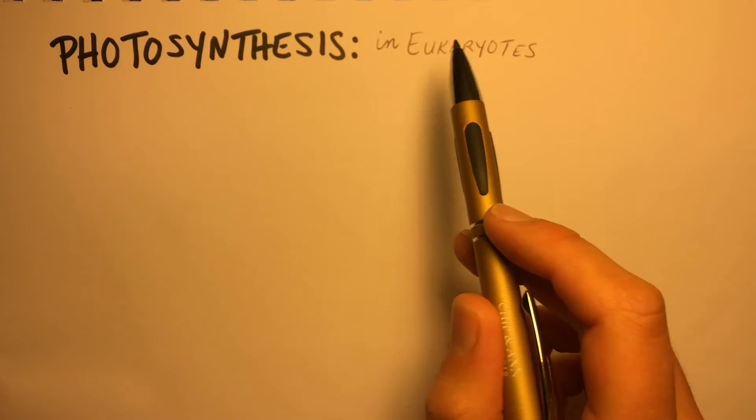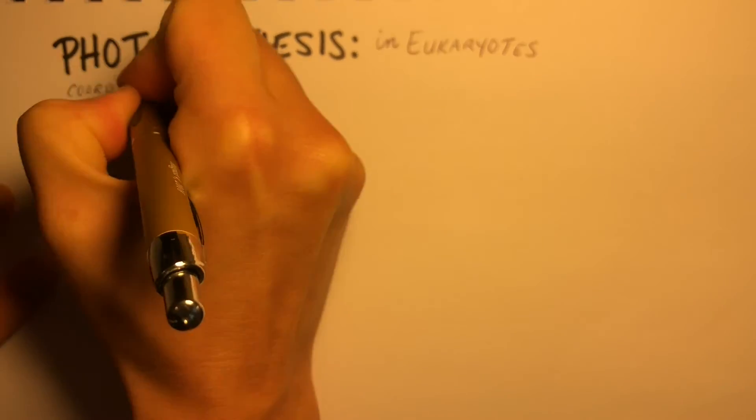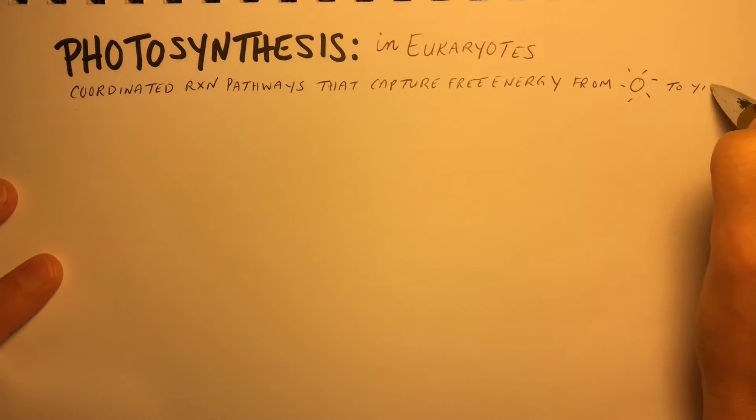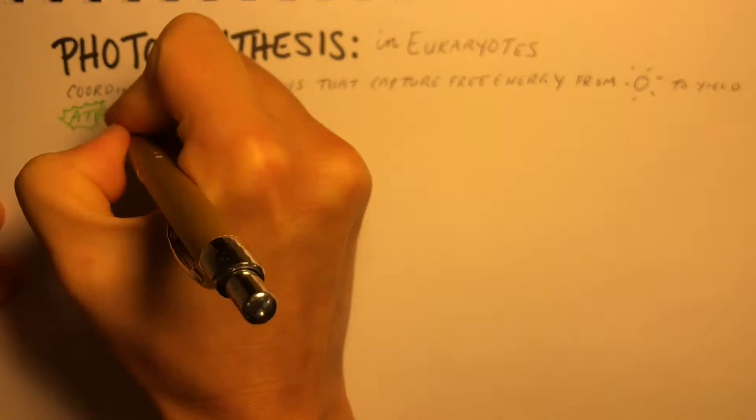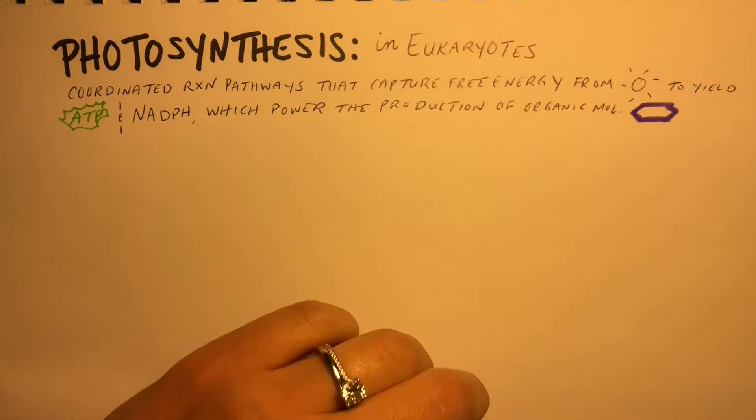Today we're focusing on photosynthesis in eukaryotic organisms. Remember, photosynthesis is a series of coordinated reaction pathways that capture free energy from the sun to yield ATP and NADPH, which are going to power the production of organic molecules, especially glucose.